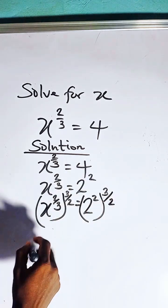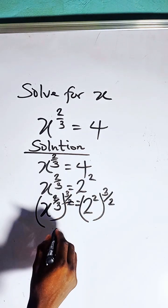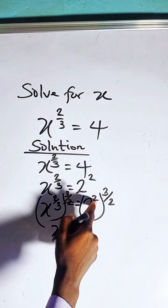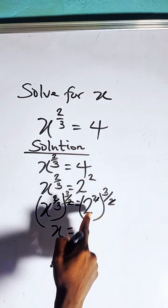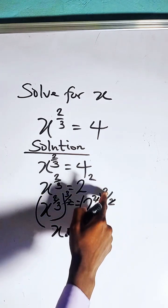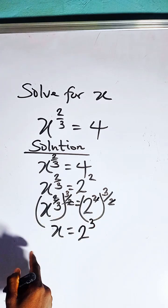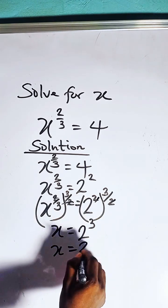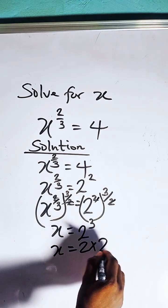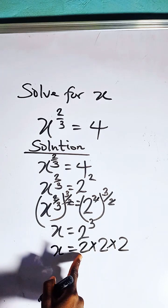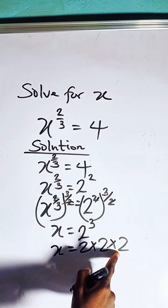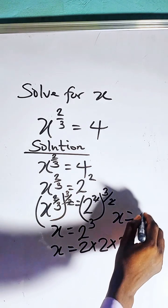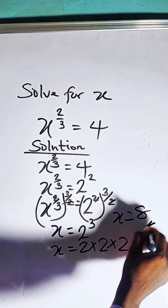This will simplify. We have x equals... 2 can cancel 2, giving us 2 raised to the power of 3. For 2 raised to the power of 3, it means 2 times 2 times 2. 2 times 2 is 4, and 4 times 2 is 8. So the value of x is 8.